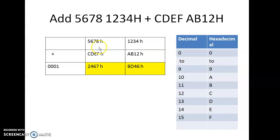Now 8 plus F: F is 15, so 15 plus 8 is 23. Divide 23 by 16 and you get 1 remainder 7, so you write 7 here and carry 1 to the next level. Then 7 plus 1 is 8, plus E: E is 14, so 14 plus 8 is 22. Divide 22 by 16 and you get 1 remainder 6, so write 6 here and carry 1 to the next level. Then 6 plus 1 is 7, plus D: D is 13, so 7 plus 13 gives 20.